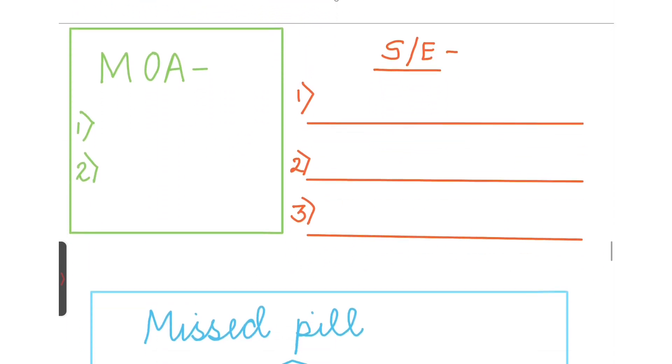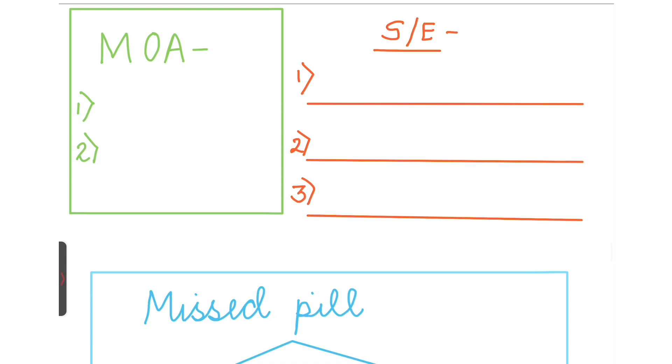Let's look at the mechanism of action. It acts as a SIRM, Selective Estrogen Receptor Modulator. As we saw that it is a non-hormonal contraceptive, it is also non-steroidal.